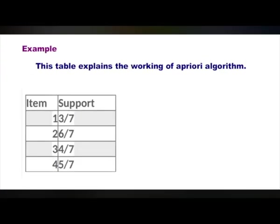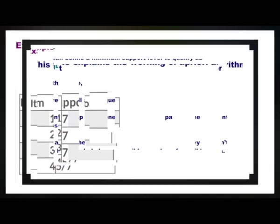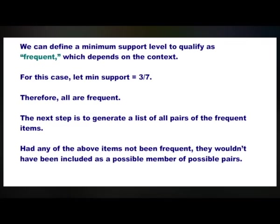Each number corresponds to a product such as butter or bread. The first step of Apriori is to count up the frequencies — called the support — of each member item separately. This table explains the working of the Apriori algorithm, with two columns: item and support. Item 1 has a support of 3 out of 7. Item 2 has support of 6 out of 7. Item 3 has support of 4 out of 7. Item 4 has support of 5 out of 7. We can define a minimum support level to qualify as frequent. For this case, let minimum support equal 3 out of 7. Therefore, all items are frequent.